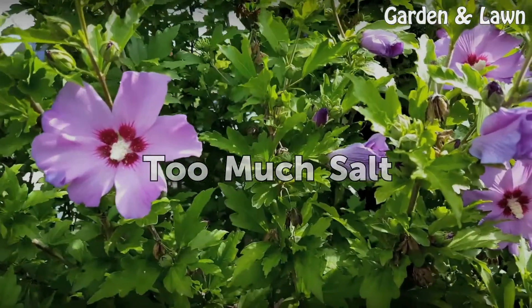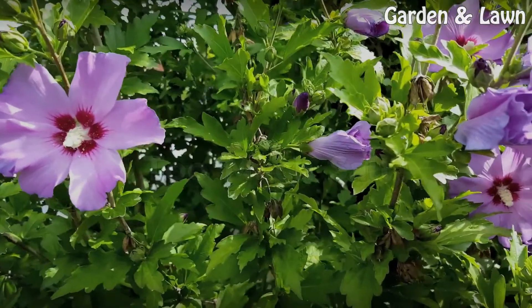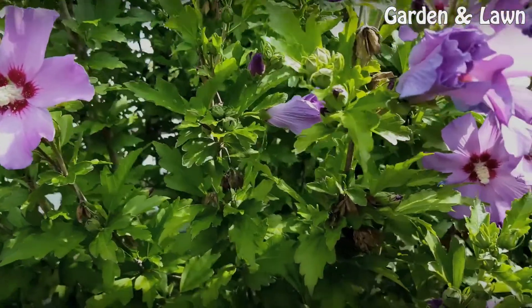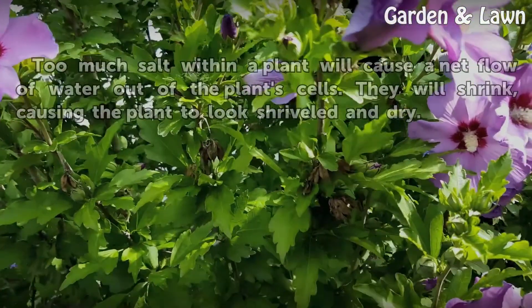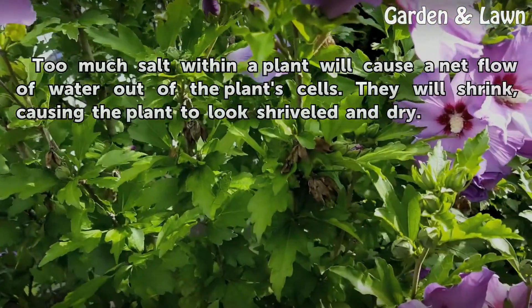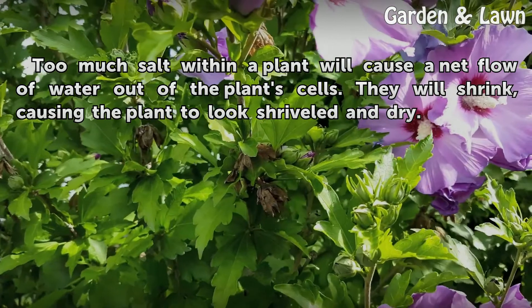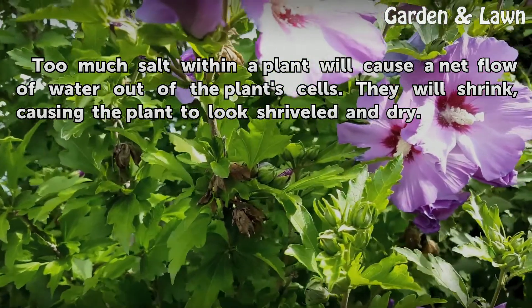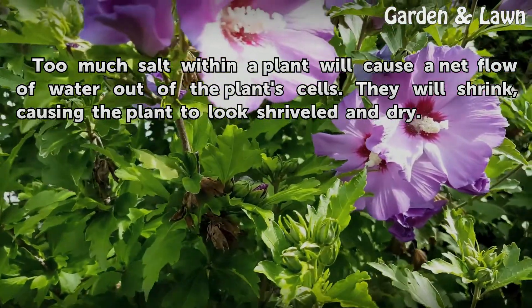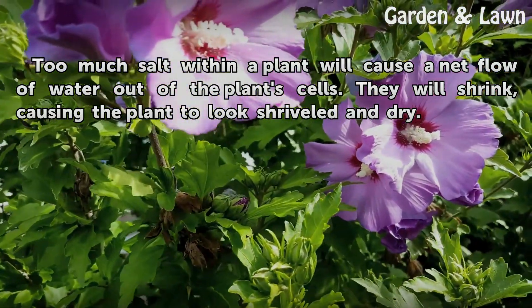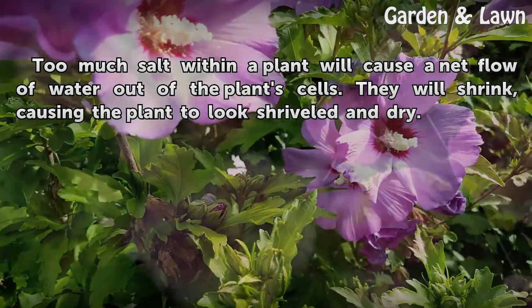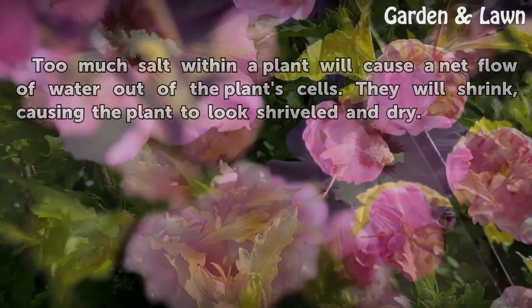Too much salt within a plant will cause a net flow of water out of the plant's cells. They will shrink, causing the plant to look shriveled and dry.